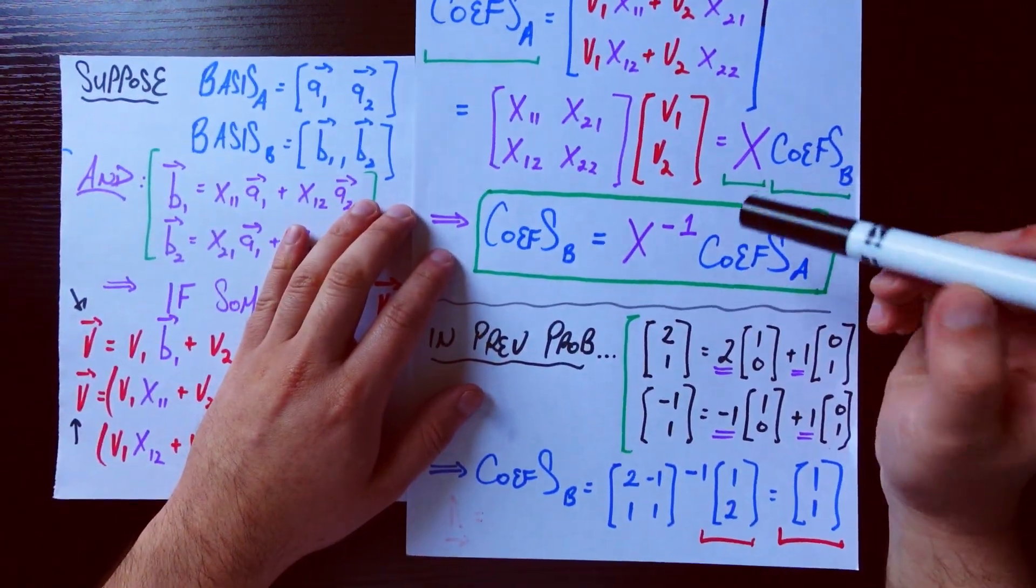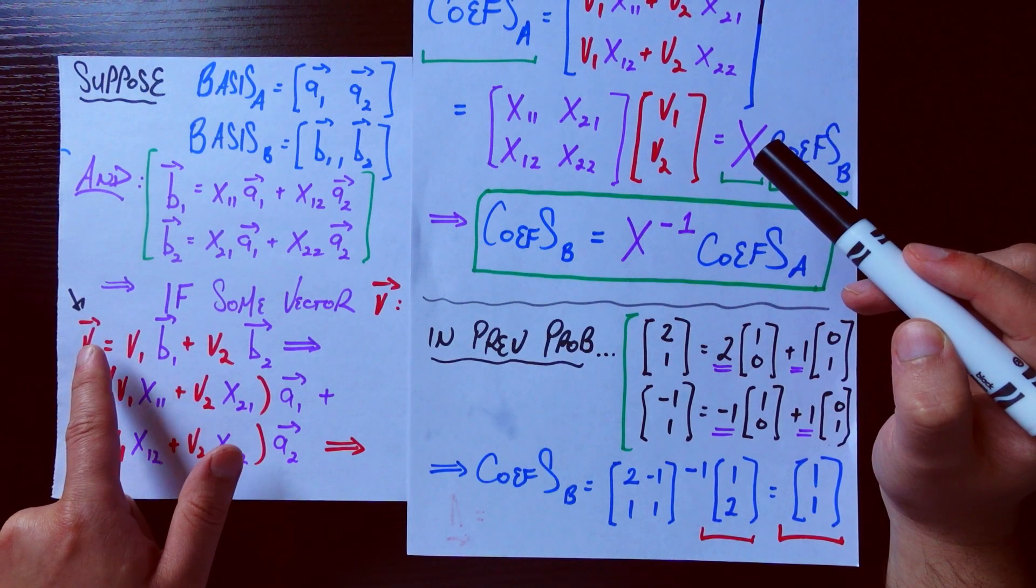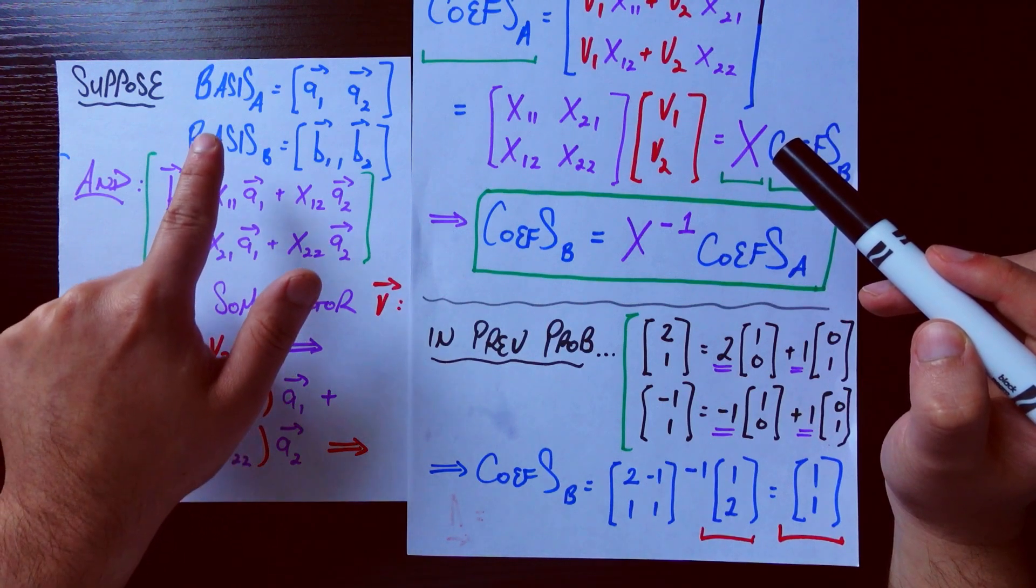In the basis B. And that is true because v1 and v2 are the exact coefficients you need in order to represent this vector v in terms of the basis b1, b2, which again is basis B.